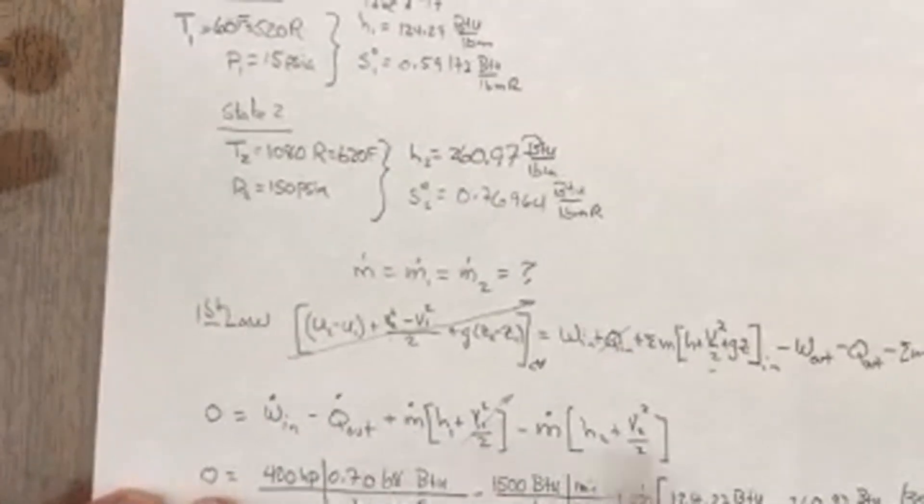So if I do that, I've got the 400 horsepower, and I have to convert it to something that's consistent, and I think I'm going to go with BTUs per second. And then my heat transfer is 1500 BTUs per minute, so I can convert that to seconds.